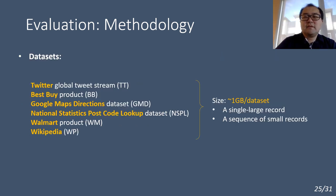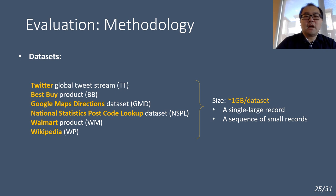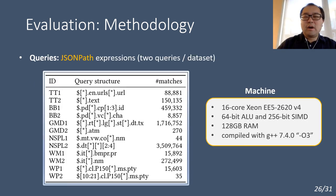The datasets used in our evaluation are collected from real-world applications. We set the size of each dataset to 1GB by default for easier performance comparison. Each dataset comes with two formats: a single large record or a sequence of small records. The queries used in our evaluation are standard JSON path expressions.